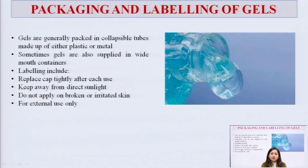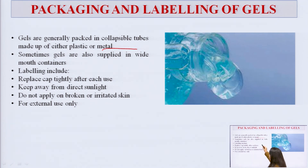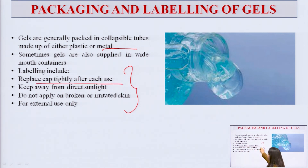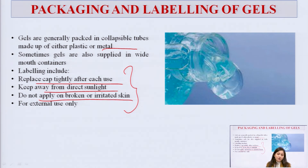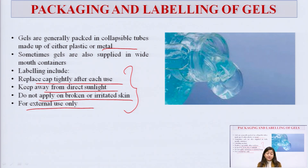Gels are packed in collapsible tubes or wide-mouth container jars. Tubes can be of metal or plastic origin. Important labeling instructions include: replace cap tightly after each use to avoid contamination; keep away from direct sunlight to avoid photolysis; do not apply on broken or irritated skin as this may seriously aggravate the condition; and the most important instruction for every semi-solid dosage form — for external use only.